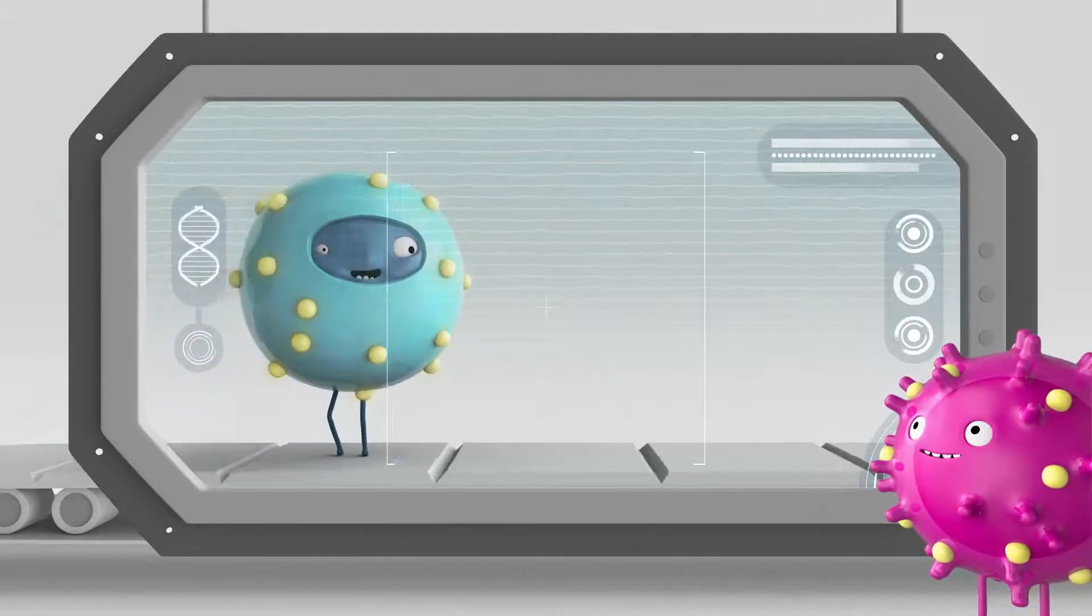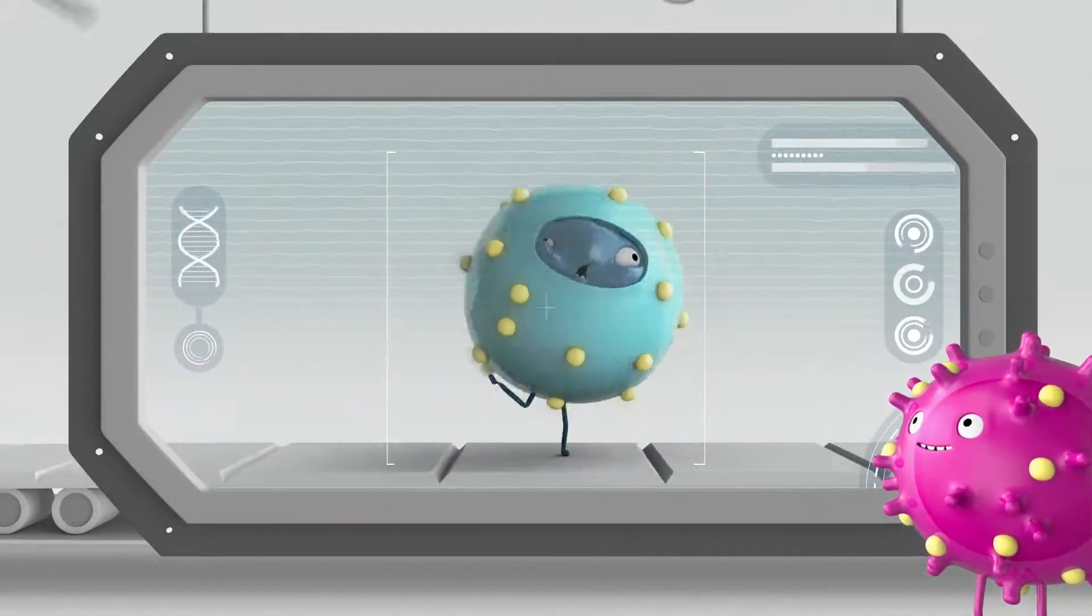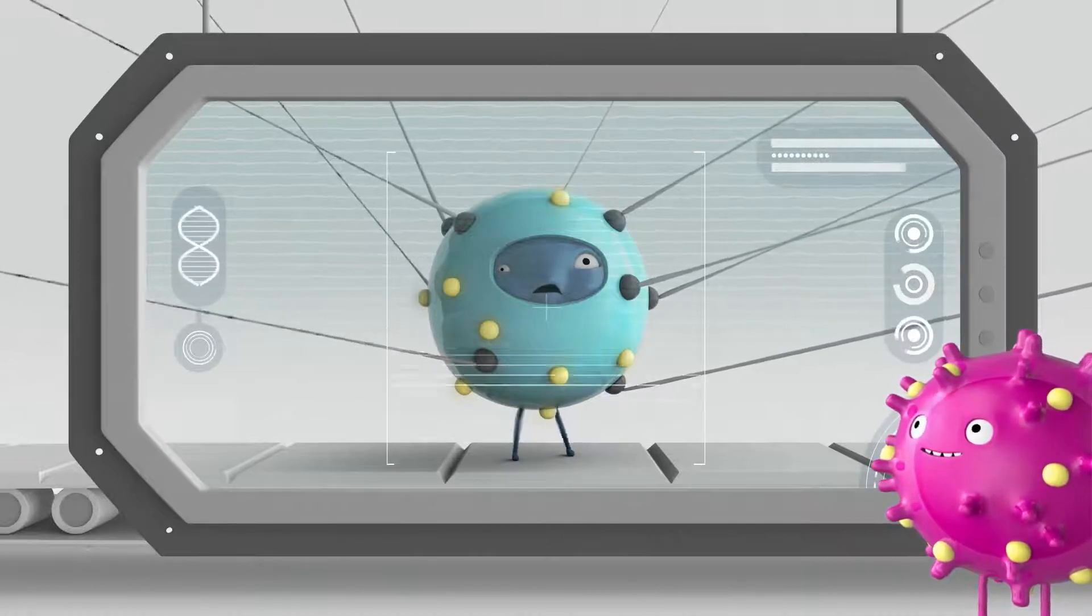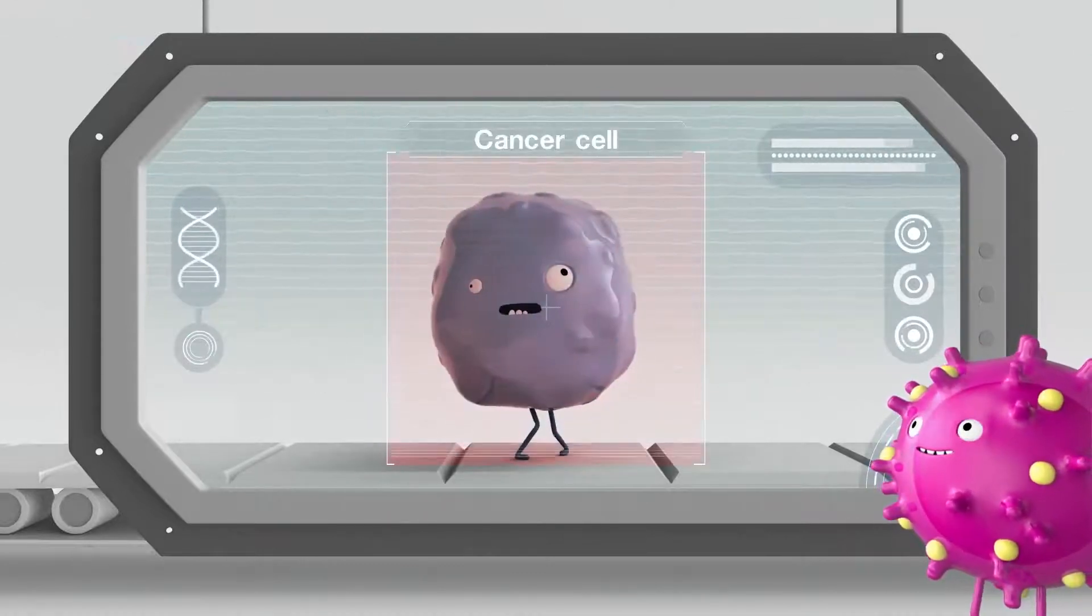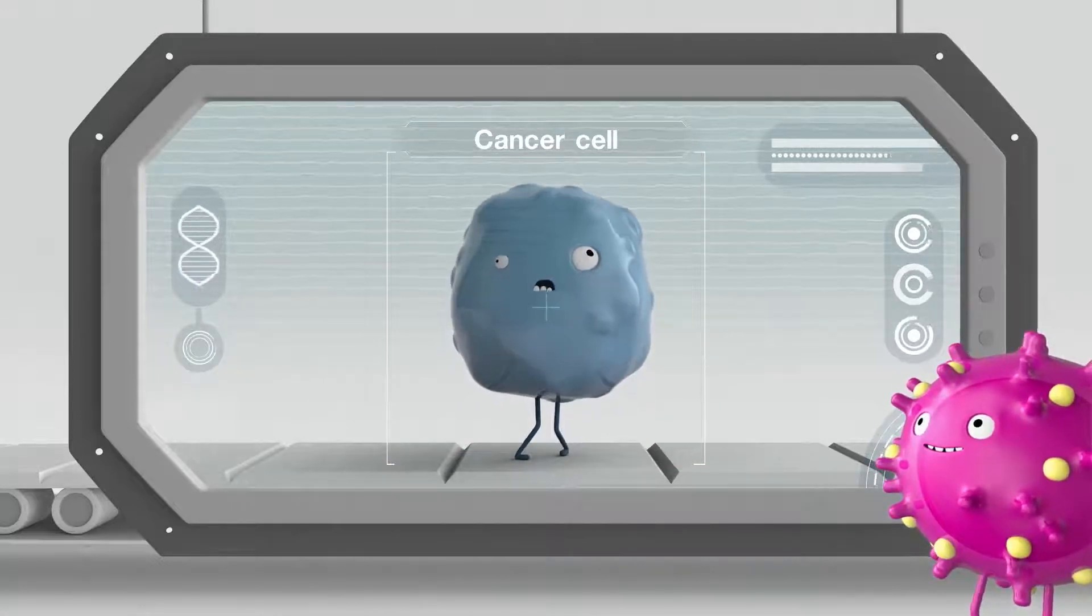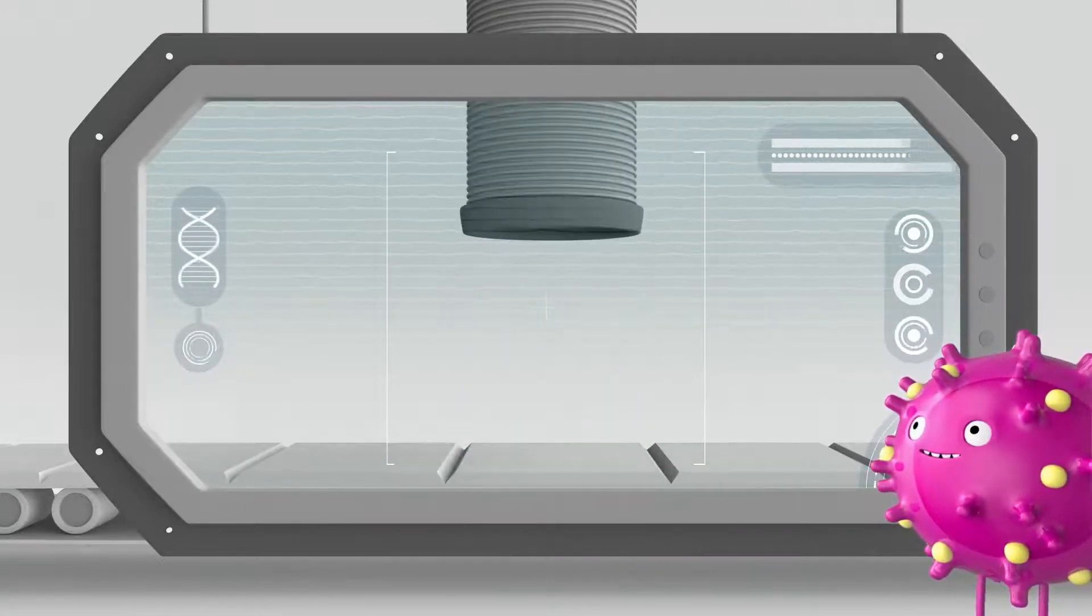One common type works by blocking these checkpoints that allow cancer cells to hide from your immune system. This allows your immune system to work once again without being held back by the checkpoints so that it can detect and destroy these cancer cells.